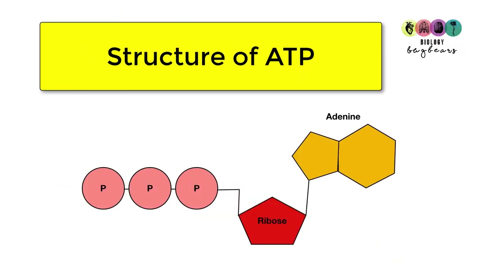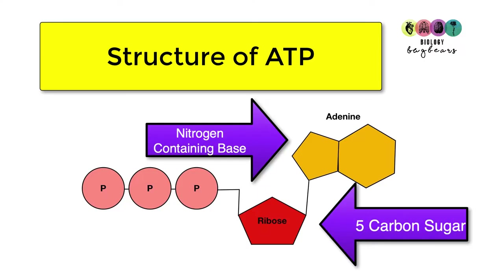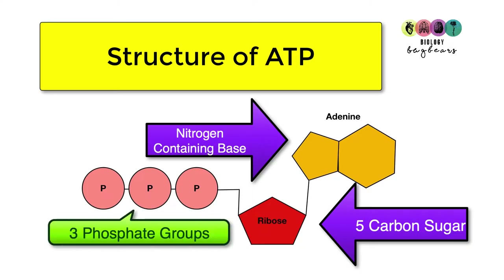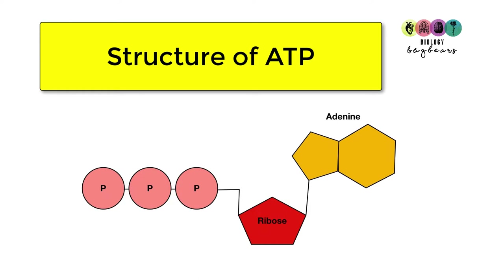To understand how ATP supplies energy for cellular activities, it's important to know its structure. Adenosine triphosphate is made up of a nitrogen-containing base called adenine, a five-carbon sugar called ribose, and three phosphate groups.